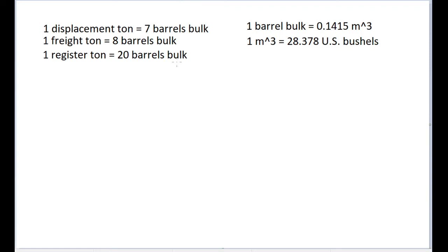So when you think of a ton as a unit, most likely you think of 2,000 pounds. You think of a measurement of weight, but in this case, we're asked to think of it as volume, or rather, we're asked to think of a ton as a group of volumes, where a displacement ton is equal to 7 barrels bulk, a freight ton is equal to 8 barrels bulk, and a register ton is equal to 20 barrels bulk.